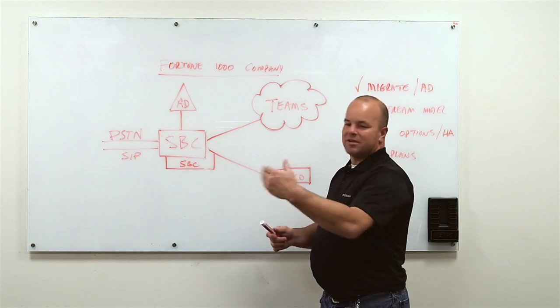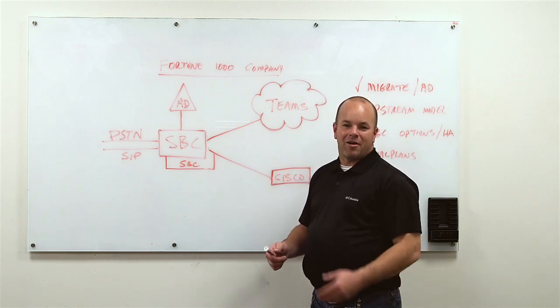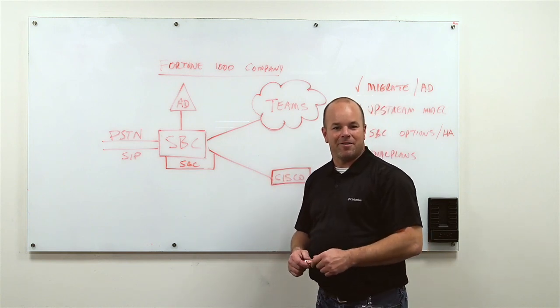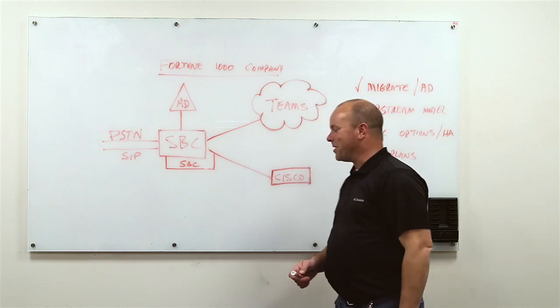If you lose one of the SBCs, the secondary one takes over without a customer losing a call that they're on at that point. This is basically the easiest way to put it.